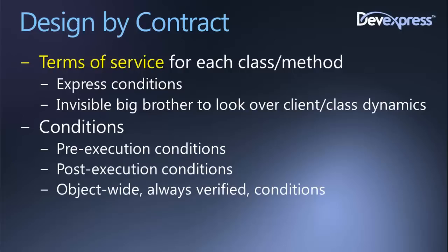What kind of conditions does design by contract use? You do design by contract by essentially defining a set of conditions per each method in each class. Conditions are basically of three types: pre-execution conditions, post-execution conditions, and a third category that are object-wide and always verified. The technical names are: pre-conditions, post-conditions, and invariants.